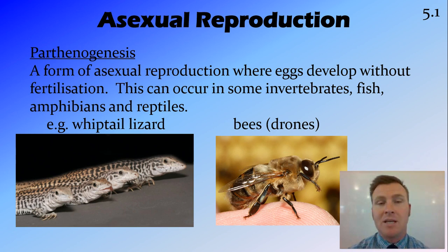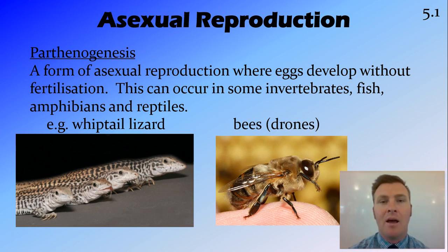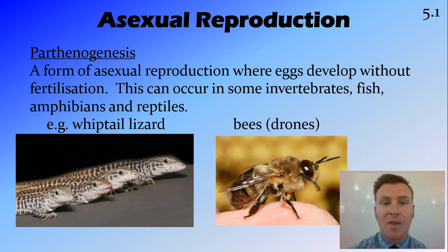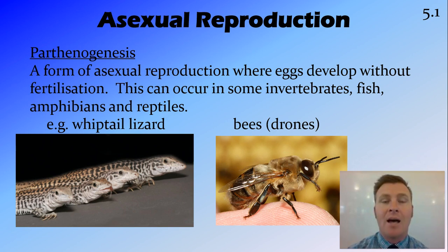For example, whiptail lizards — if there aren't any males around in an area, the female can go through parthenogenesis and create identical copies from her eggs. Parthenogenesis also occurs in bees.